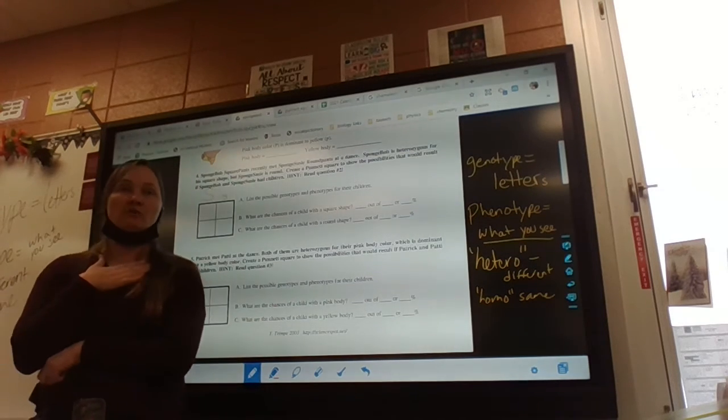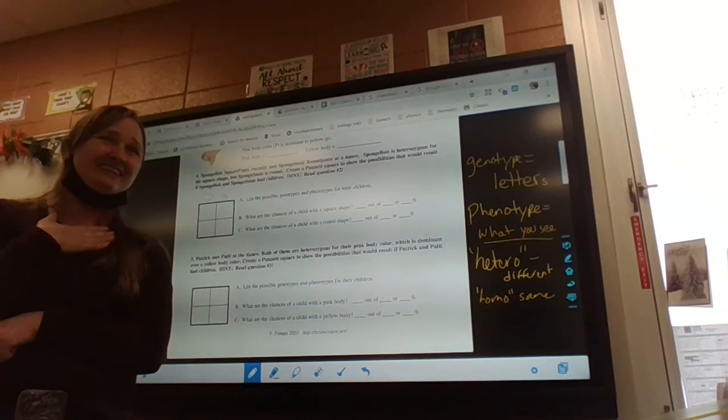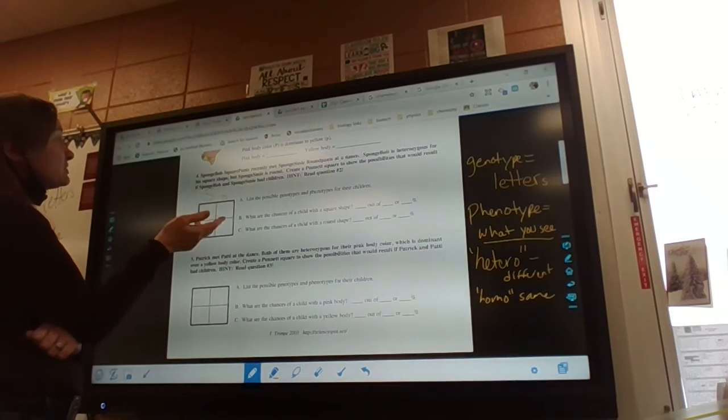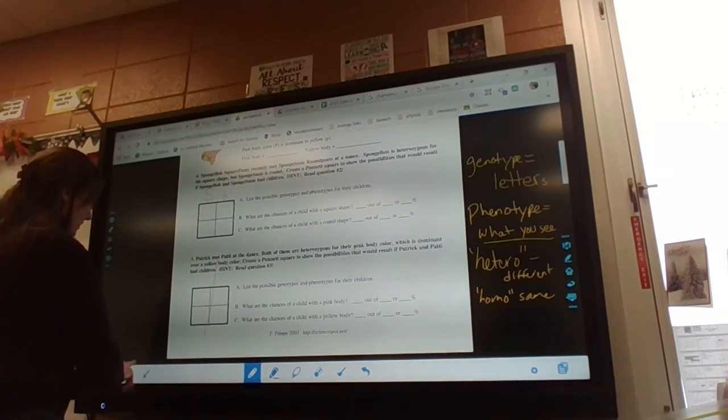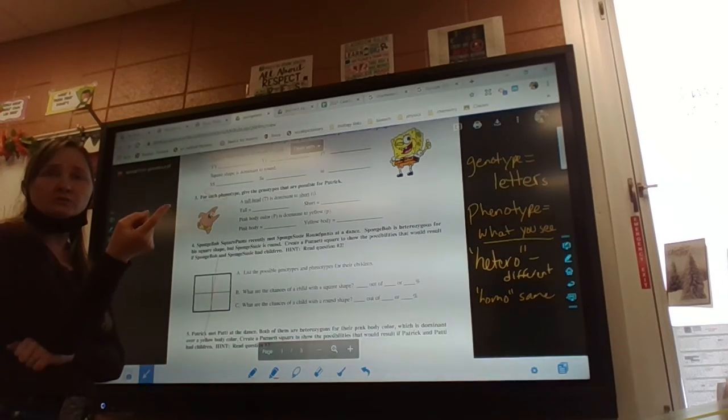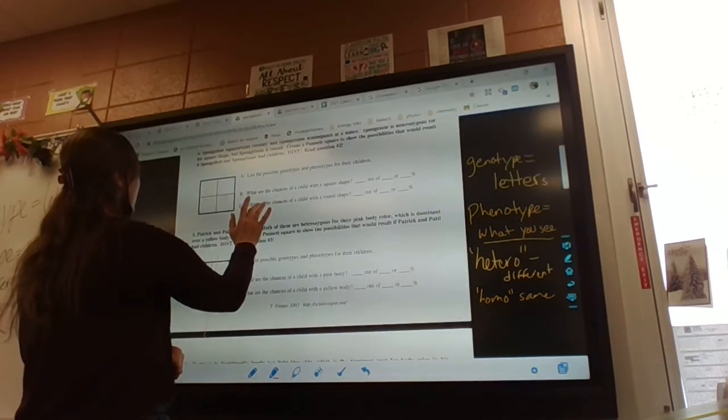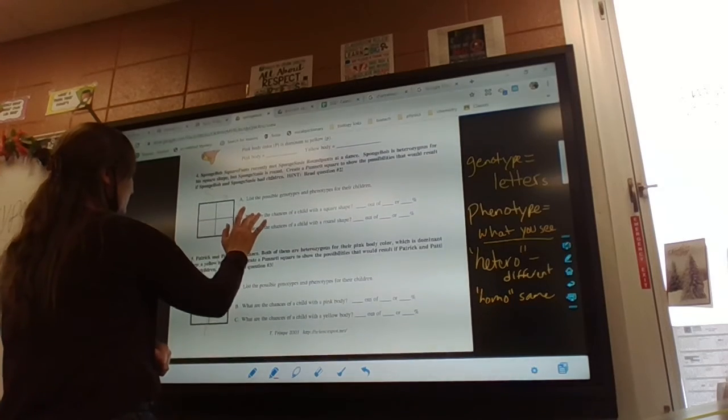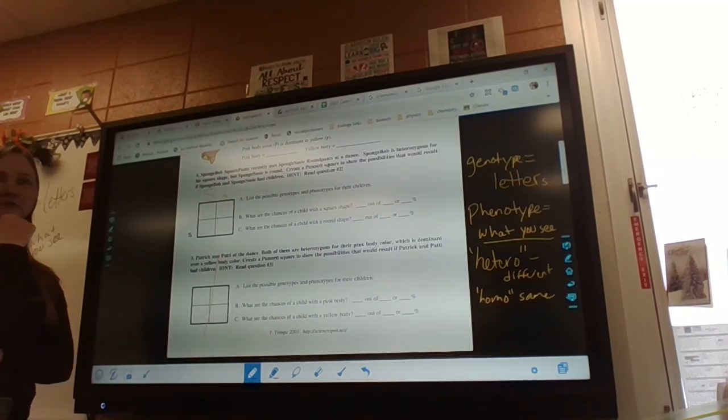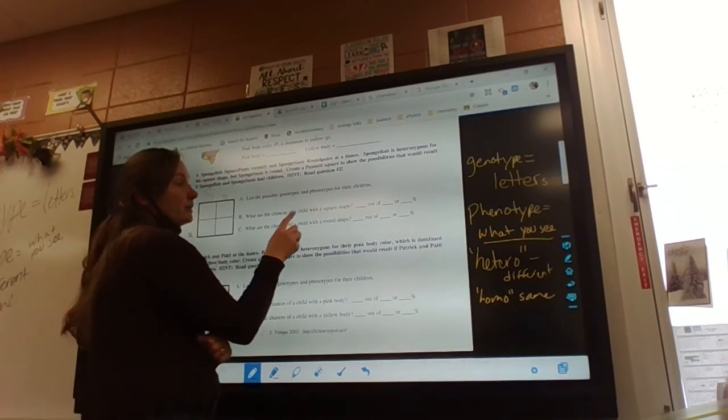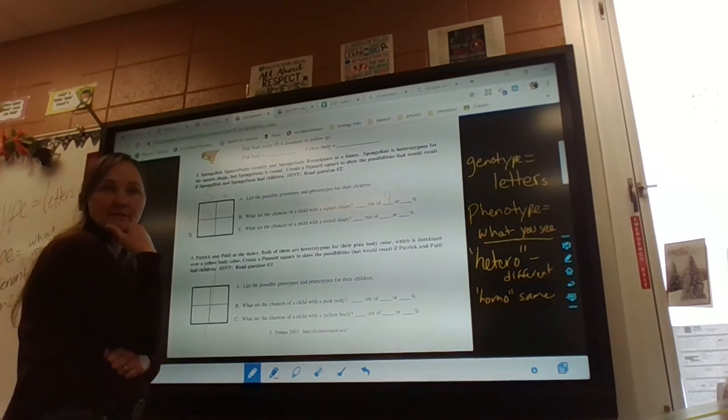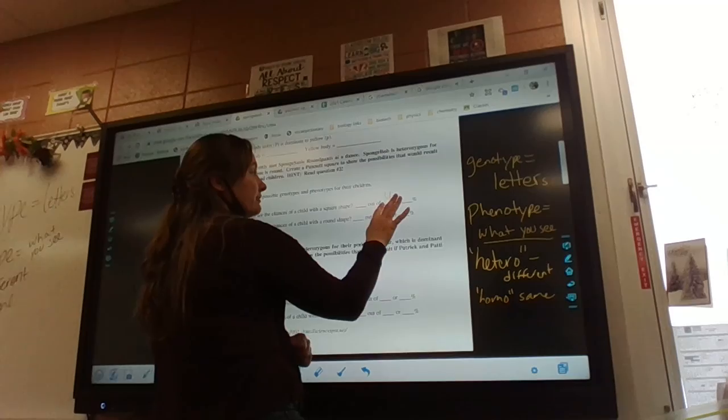If Sponge Suzy is round, what must she be? There's only one way to be round - little and little. So what she's going to be is she's going to have to be obviously little, obviously little. And then run out your Punnett square. Over here, this would be how many out of four, because there's one, two, three, four possibilities. This would always be out of four.